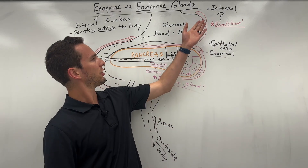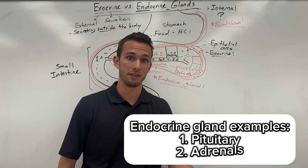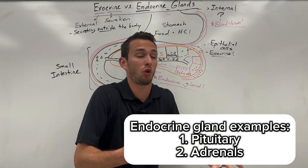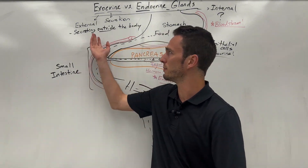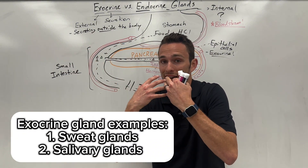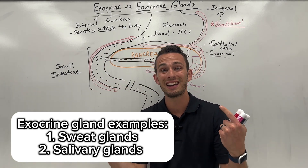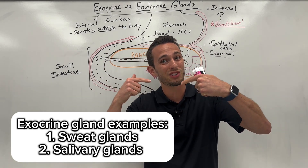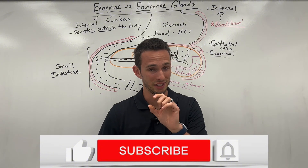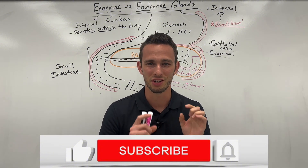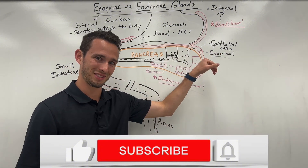A couple other examples of endocrine glands would be the pituitary gland and the adrenal gland, all secreting hormones that go into the bloodstream. Whereas exocrine glands could be your sweat glands or your salivary glands, because those secretions are not going into the bloodstream — they're technically going outside of the body. If you liked this video, please click the like button, subscribe to the channel, and check out this video right here to understand more about hormones.